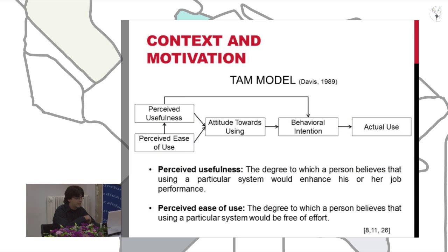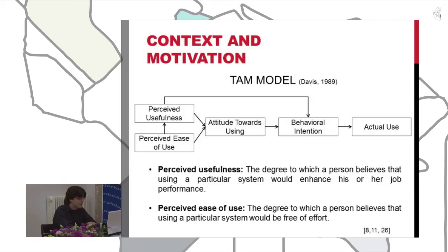The Technology Acceptance Model proposed by Davis is a theoretical proposal based on the Theory of Reasoned Action and the Theory of Planned Behavior by Fishbein and Ajzen, which tries to analyze and predict the actual use of a technology. It rests on two main concepts: the perceived usefulness, which is the degree to which a person believes that using a particular system would enhance their performance, and the perceived ease of use, which is the degree to which a person believes that using a particular system would be free of effort.